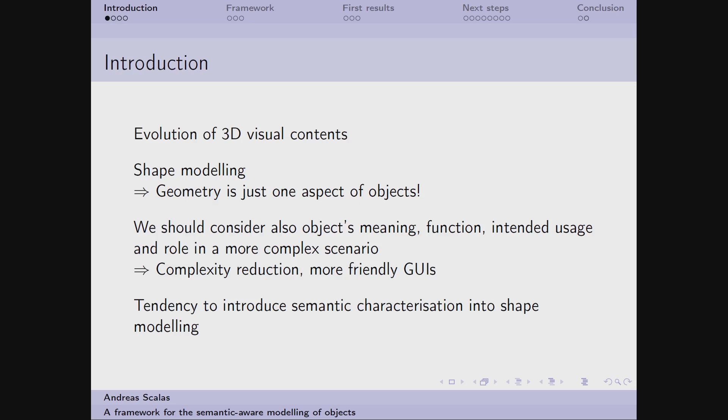Lately we have seen a huge increase in the efforts for trying to introduce an intelligence layer into the shape modeling. And this should consider other properties than just the object geometry, for example its meaning, how it functions, what is its intended usage, and how it can fit into a more complex scenario. The use of this approach will allow different improvements, going for example from the reduction in complexity in the state-of-the-art algorithms to the possibility of driving more natural interfaces for the users.